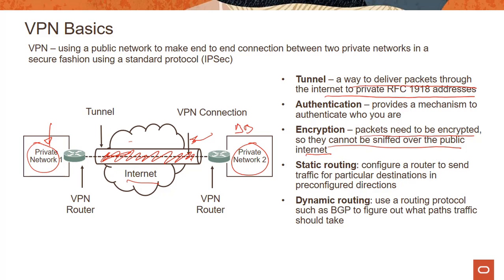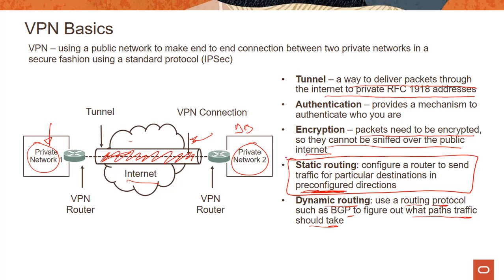There are two different kinds of routing supported. One is static routing, where you configure a router to send traffic for particular destinations in pre-configured directions. The other is BGP dynamic routing, where a routing protocol like BGP is used to figure out what paths traffic should take. OCI used to only support static routing, but now we support both static and dynamic routing.